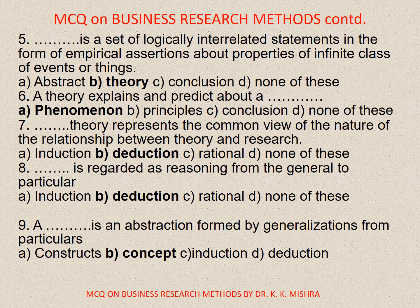Question number six. A theory explains and predicts about A. dash. Options are: A. Phenomenon, B. Principles, C. Conclusion, D. None of these. Correct option is A. Phenomenon.